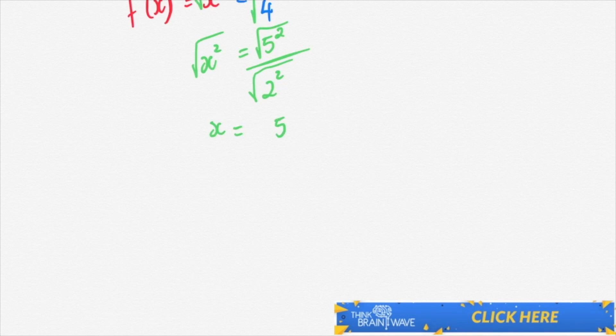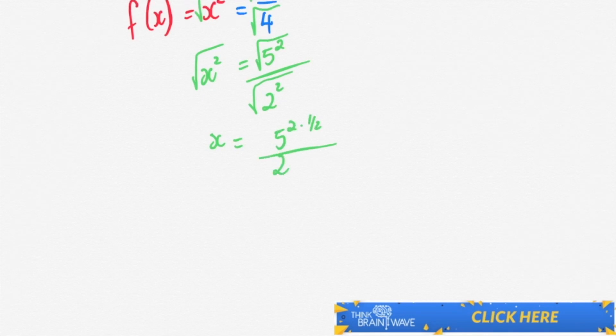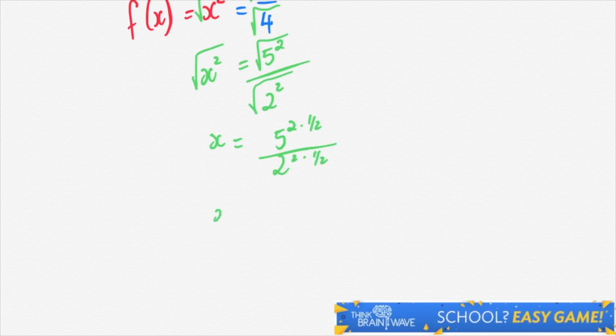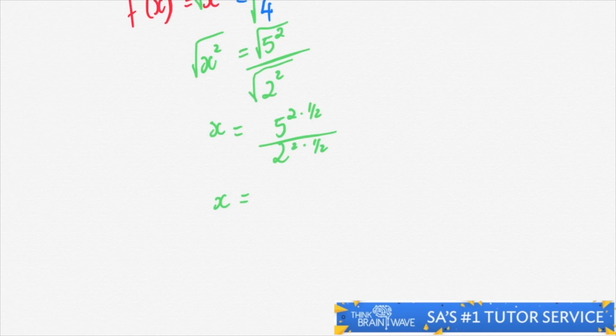Let's move further. We now take the square root of x squared, which gives you x. The square root of 5 squared is the same as saying 5 squared times a half. The same goes for 2 squared times a half as the square root of 2 squared.